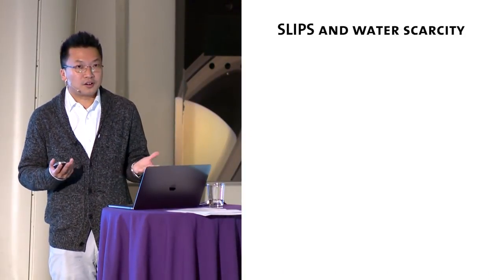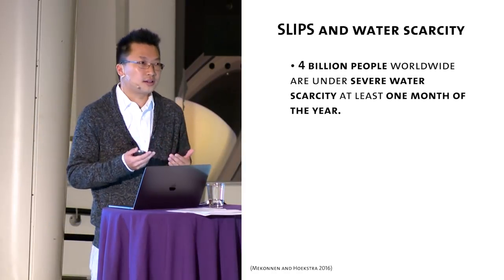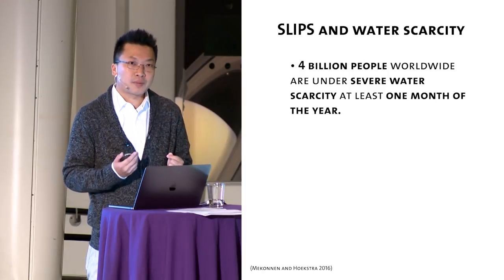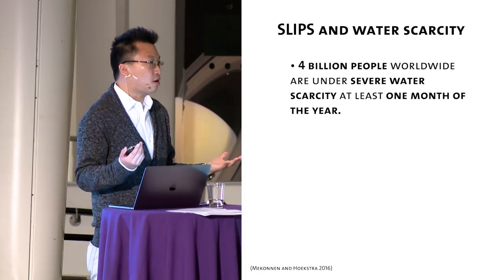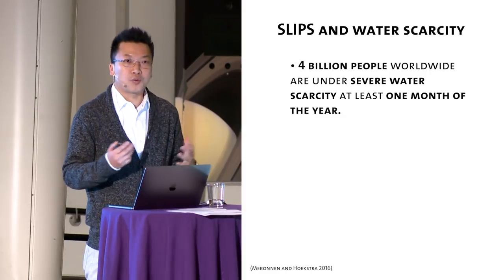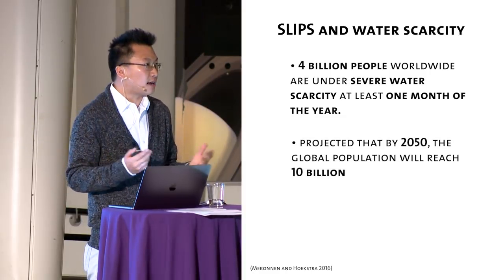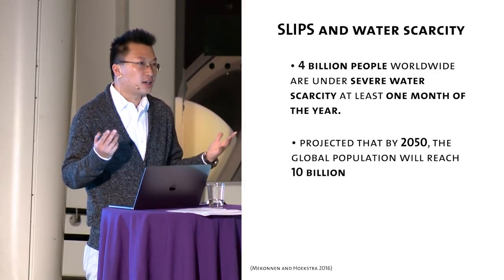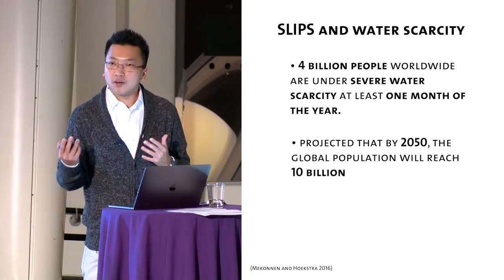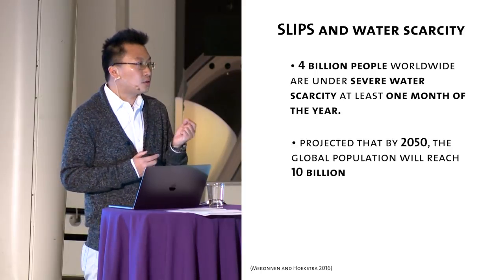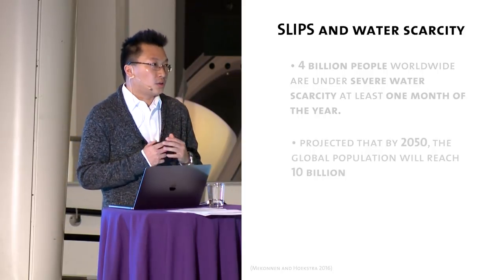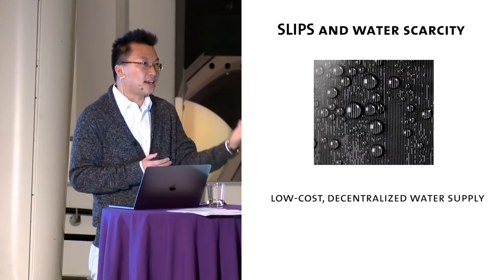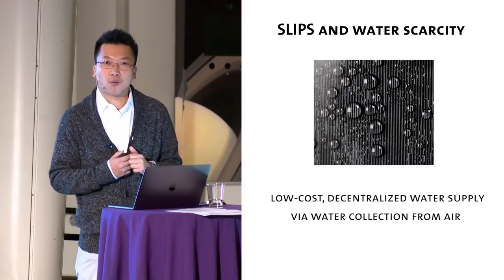You might have known that or you might not. There are 4 billion people under severe water scarcity at least one month in a year. This is a big problem and this is going to be a bigger problem because as time goes, we have more people. Indeed, it is projected that by 2050, we will have close to 10 billion people on Earth. So water is going to be a big problem. But how can we solve this problem? One solution we have is to create a low-cost, decentralized water supply. And one technology to enable that would be to collect water directly from air.